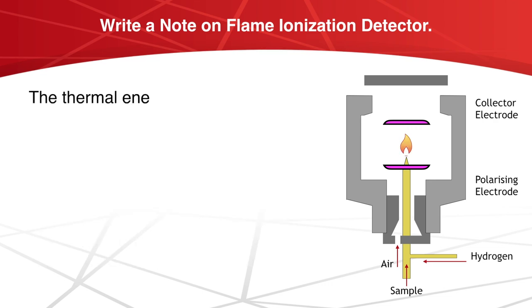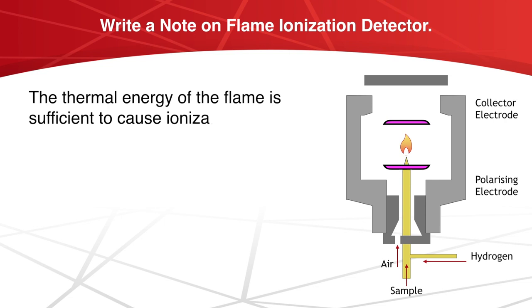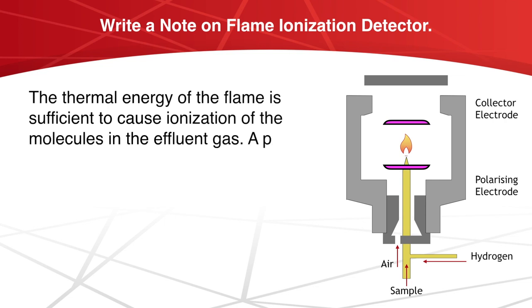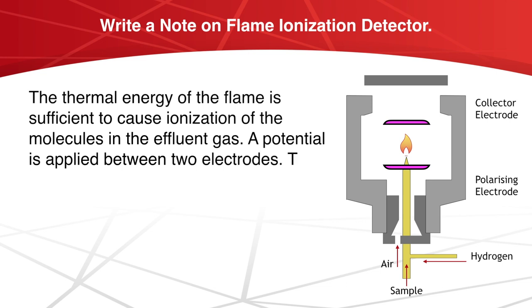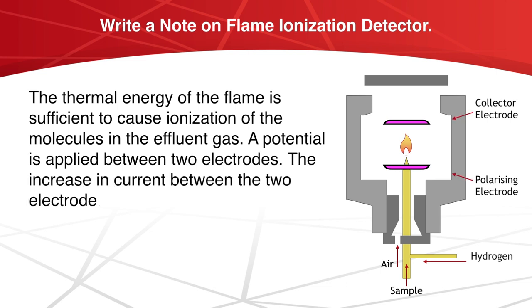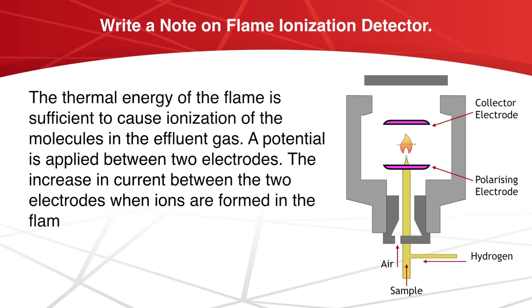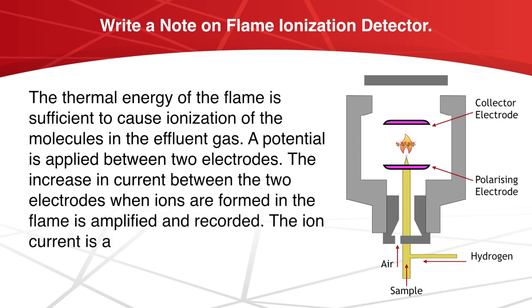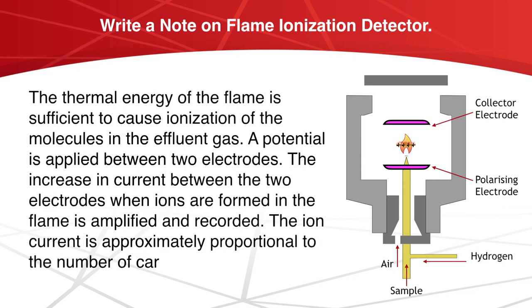The thermal energy of the flame is sufficient to cause ionization of the molecules in the effluent gas. A potential is applied between two electrodes, and the increase in current between the two electrodes when ions are formed in the flame is amplified and recorded. The ion current is approximately proportional to the number of carbon atoms which enter the flame.